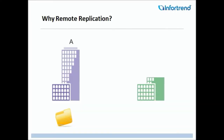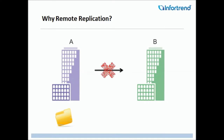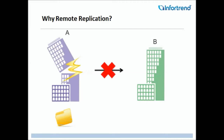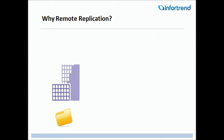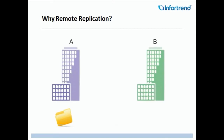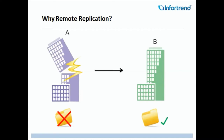Why use Remote Replication? In a non-remote replication scenario, Site A data is not remote replicated to Site B. Should an unforeseen incident occur and result in complete data loss at Site A, the data may be lost forever. However, in a remote replication scenario, Site A data is remote replicated to Site B. Should an unforeseen incident occur and result in complete data loss at Site A, the data may be recovered from Site B.